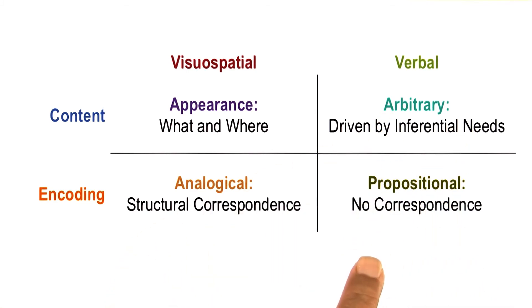In a propositional representation of the kind we saw, we may have tracks and props and actors. An analogical representation of the script for going to a restaurant, we may have a short movie.